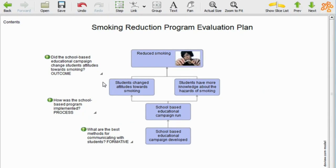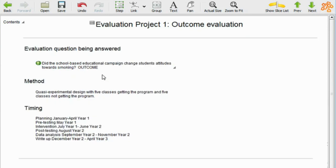What I'm doing is that first evaluation project is an outcome evaluation project. And we've got listed here the question, which has been answered in that project, did the school-based educational campaign change students' attitudes towards smoking? And then I've set out the method, which I've described here, which is quasi-experimental design, with five classes getting the program and five classes not, and comparing the results.